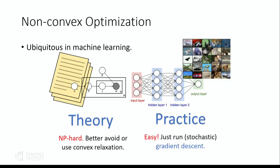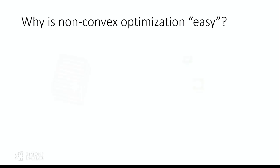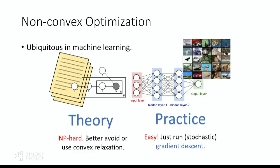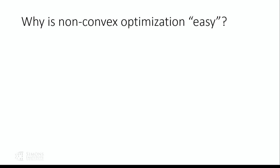So why is there a difference between theory and practice for non-convex optimization? We still don't have a complete answer, but recently many researchers, including myself, have been trying to understand this from the perspective of optimization landscape. We say that non-convex optimizations are easy in practice partly because many of the objectives that people are trying to optimize in practice are very simple. In this talk, I will call these objectives locally optimizable objectives.